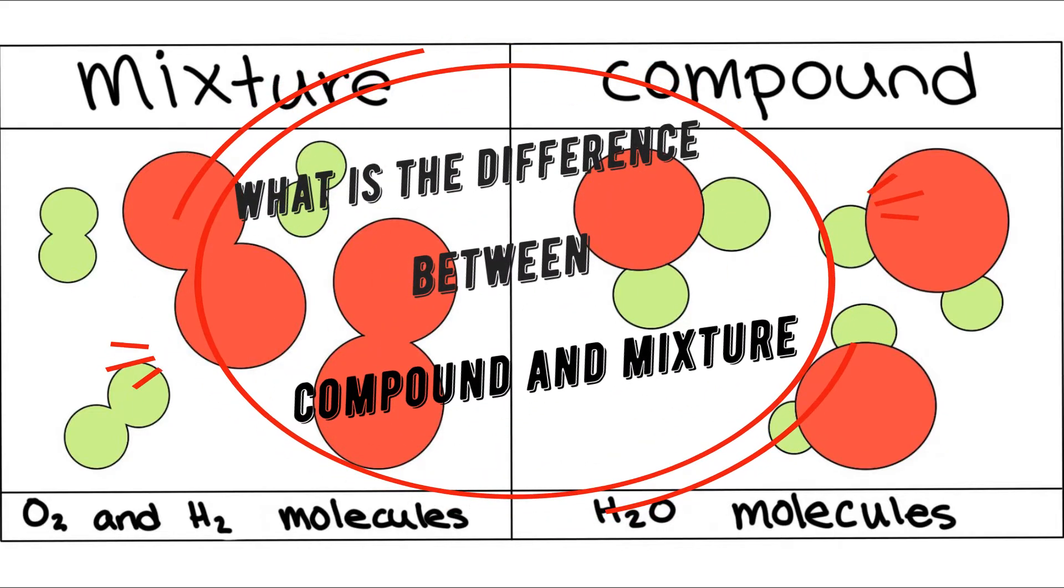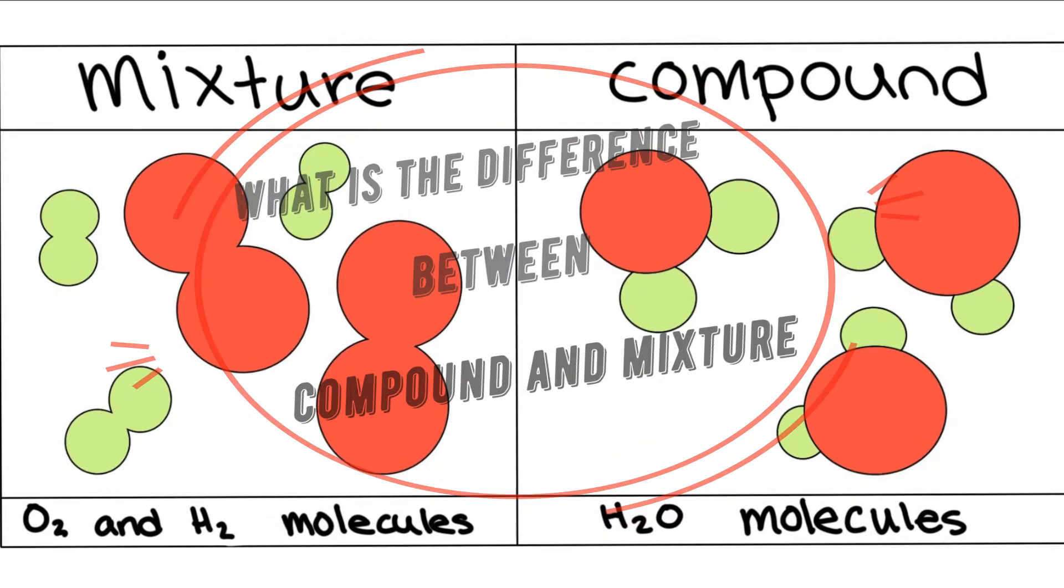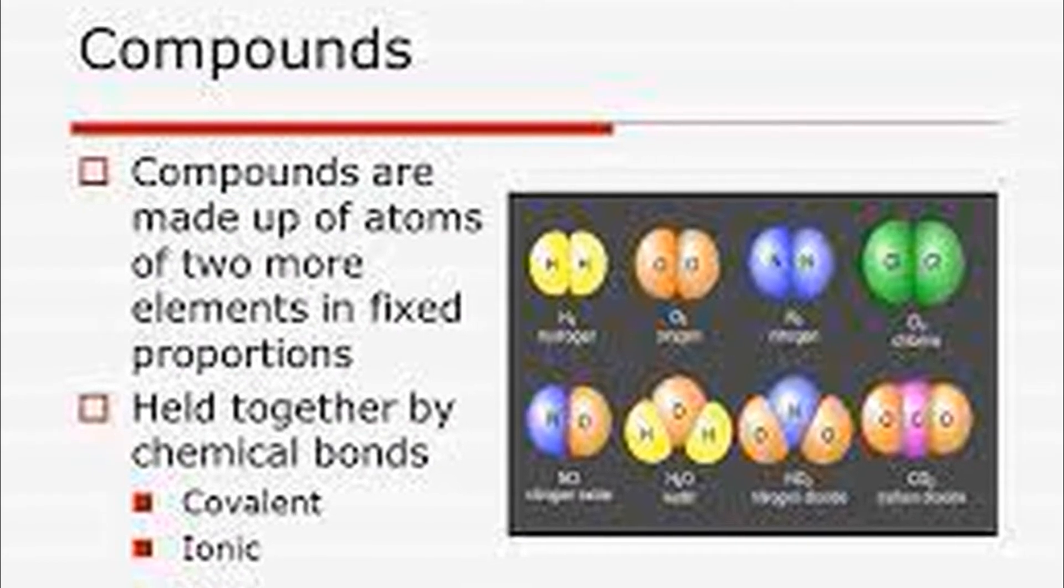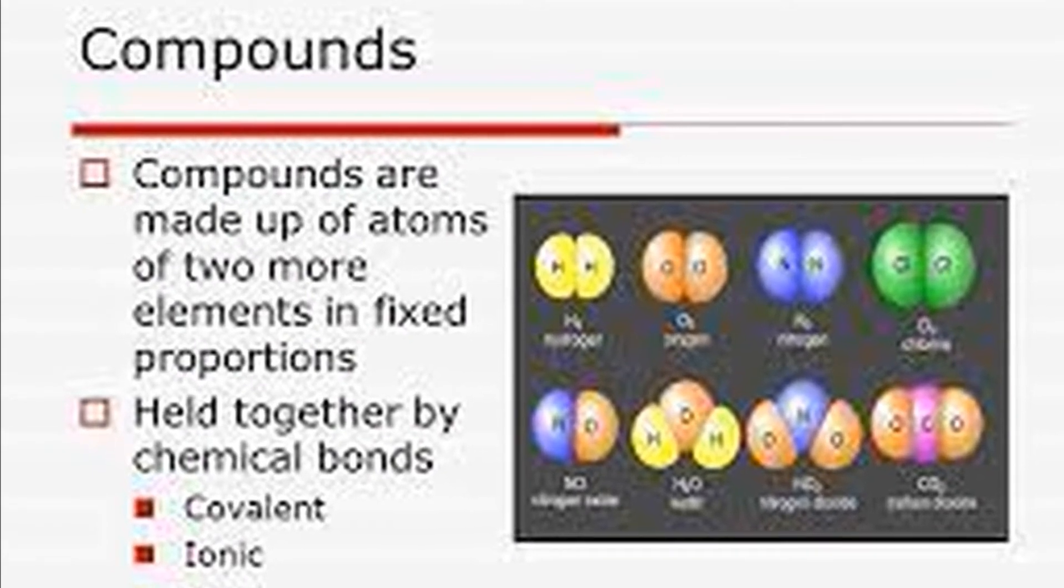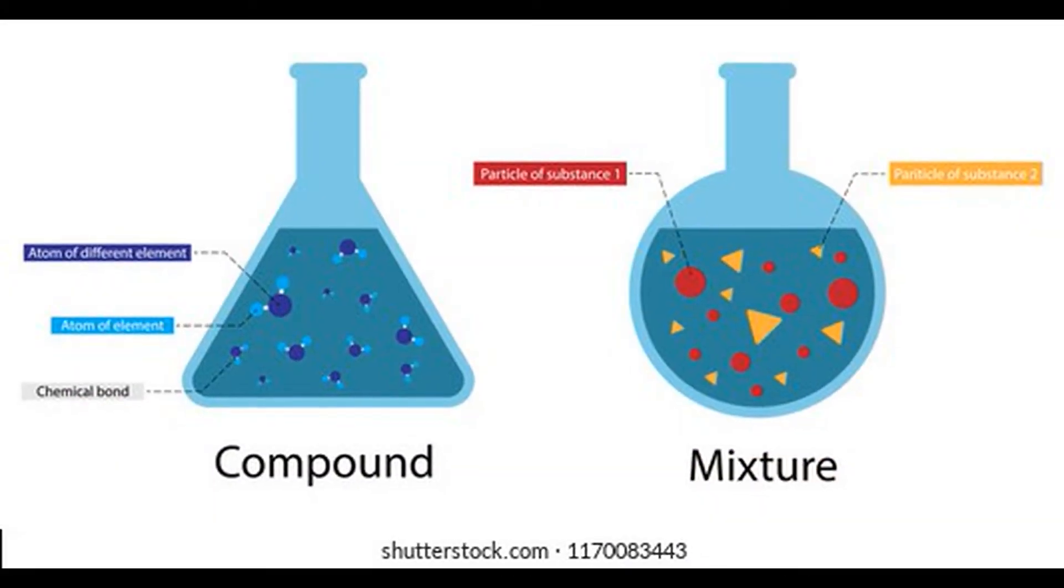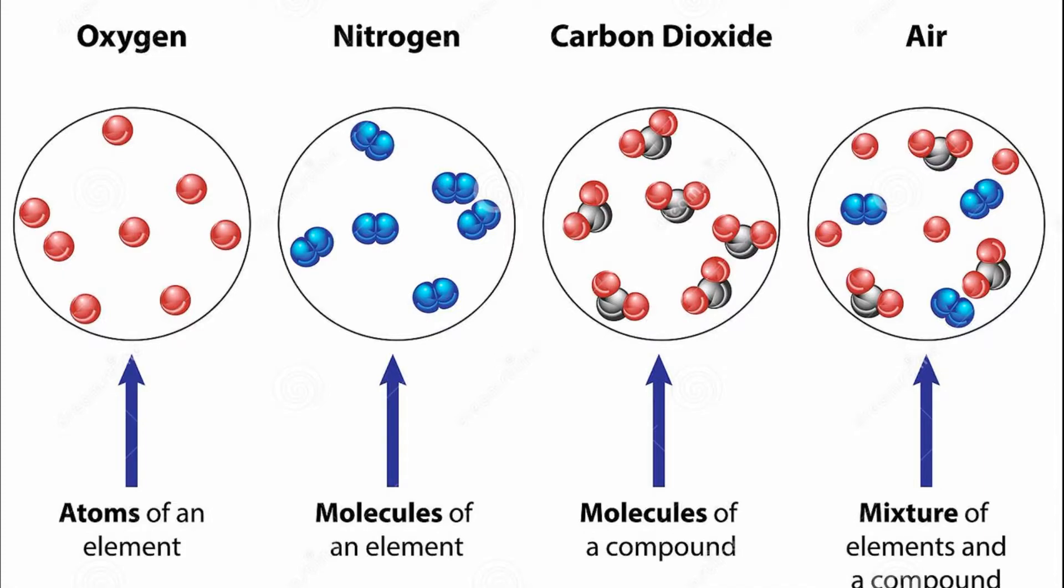What is the difference between compounds and mixtures? Compounds are made up of elements in a fixed proportion, while mixtures are made up of elements, compounds, or both in any proportion.